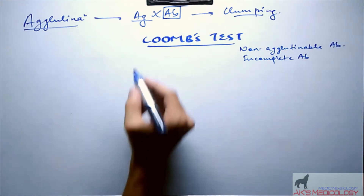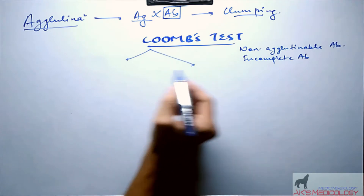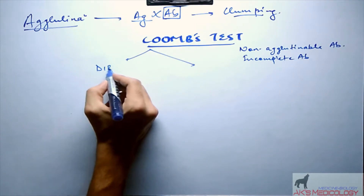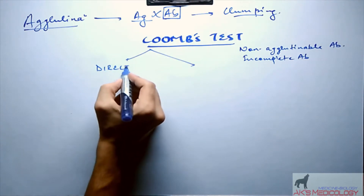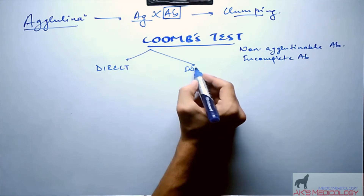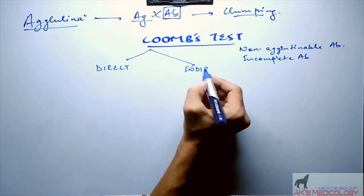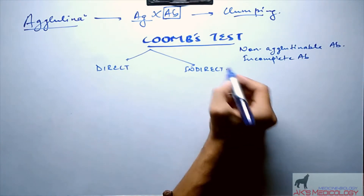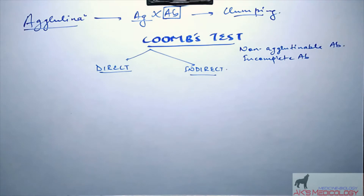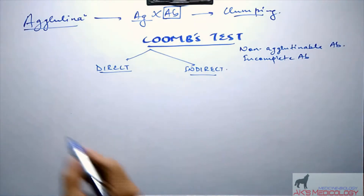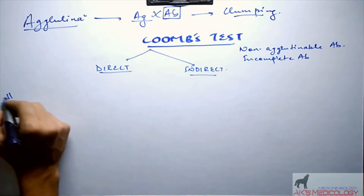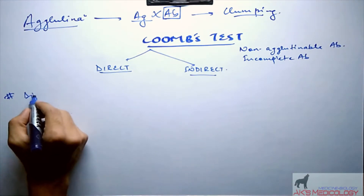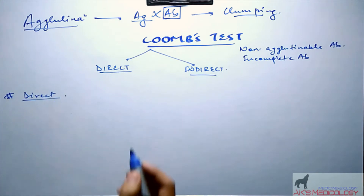Coombs test is performed by two ways: one is the direct method and the other is the indirect method. Let us understand the direct method of Coombs test by a simple example.